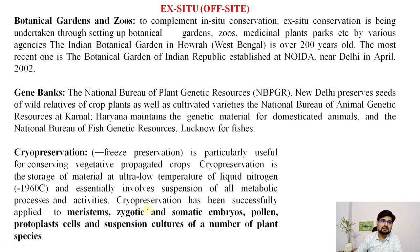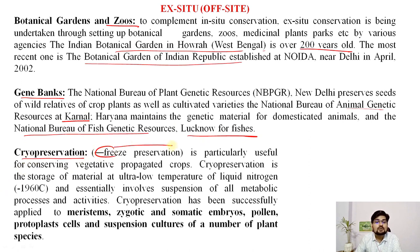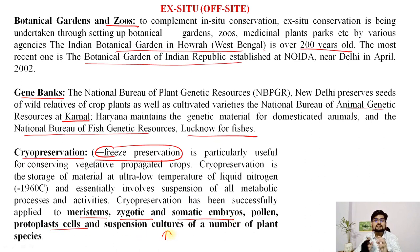For ex-situ conservation in India, we have botanical gardens such as the Indian Botanical Garden in Howrah, West Bengal, which is 200 years old, and the Botanical Garden of the Indian Republic in Noida. Gene banks include the National Bureau of Animal Genetic Resources at Karnal, Haryana, and the National Bureau of Fish Genetic Resources in Lucknow. Cryopreservation — freezing preservation using low temperatures — protects the gene pool by preserving meristem, zygotic and somatic embryos, pollens, and protoplast cells using liquid nitrogen.